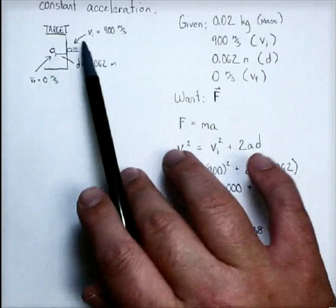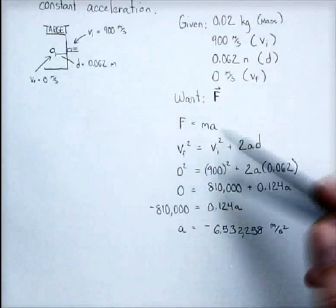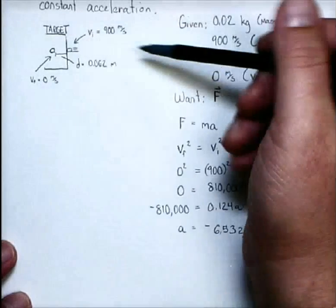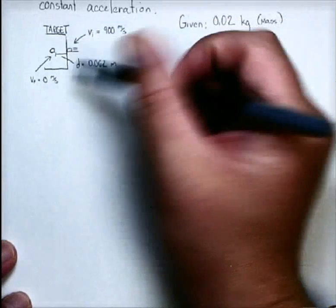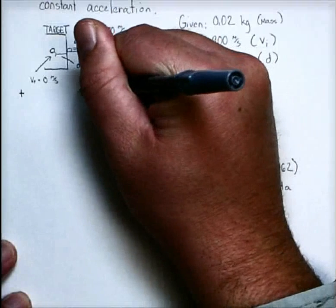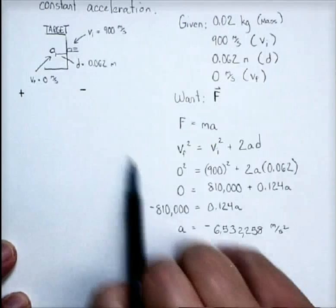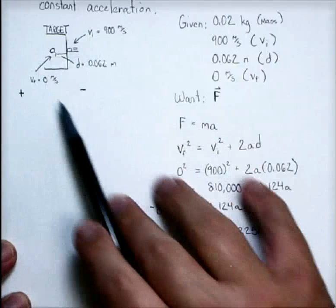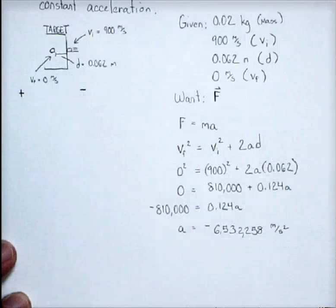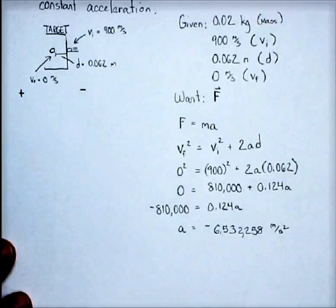We defined our initial speed as 900 meters per second, and I drew my picture where it was traveling that way. And since I said that, my positive direction is this way, and my negative direction is this way. That negative acceleration tells me that the speed and the acceleration were in opposite directions, so this was slowing down. That actually kind of makes sense. So, so far so good. It's passing the common sense smell test. Things look okay.